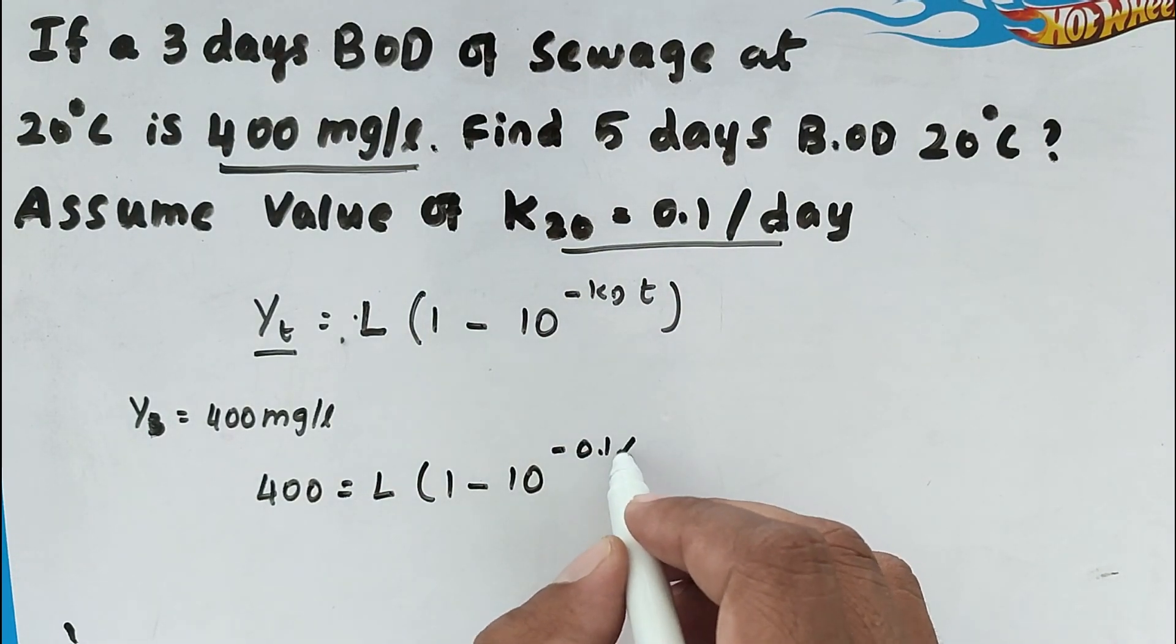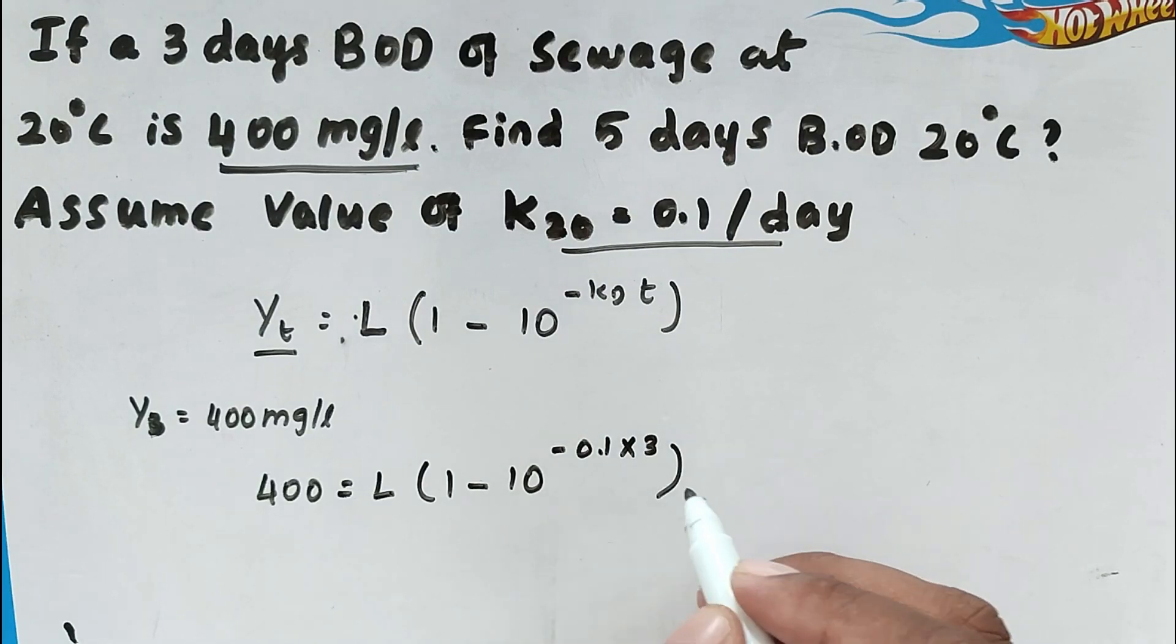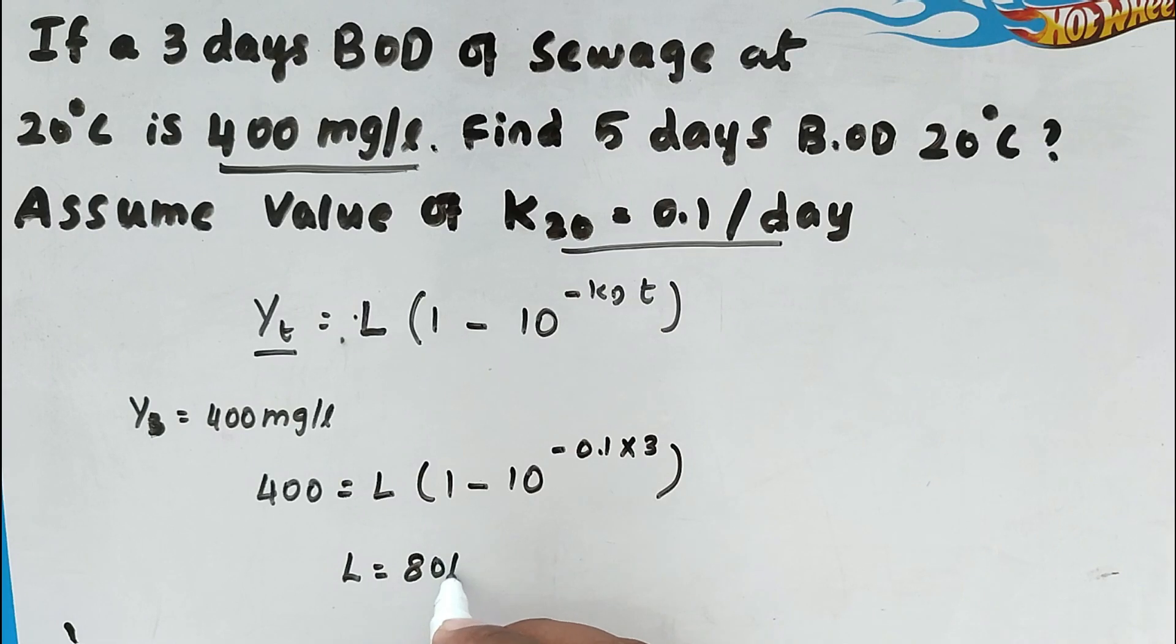So now 0.1 into the T value is 3 days BOD, so 3. So solving this we got the value L equal to 801.9 milligram per liter.